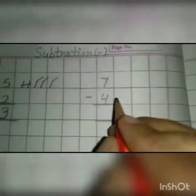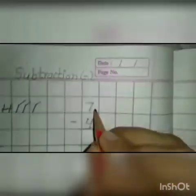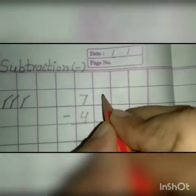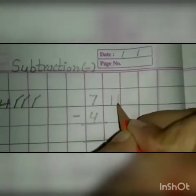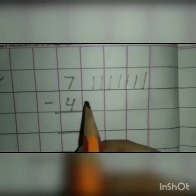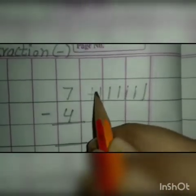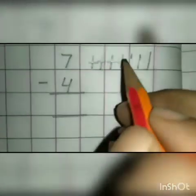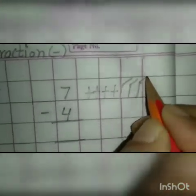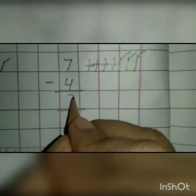Let's go to the next sum. And this is number 7. Now you will draw 7 lines here: 1, 2, 3, 4, 5, 6, 7. And this is number 4. Now you take away 4 lines from these lines: 1, 2, 3, 4. How many lines are left? Let's count: 1, 2, 3. Now we will write 3 here.